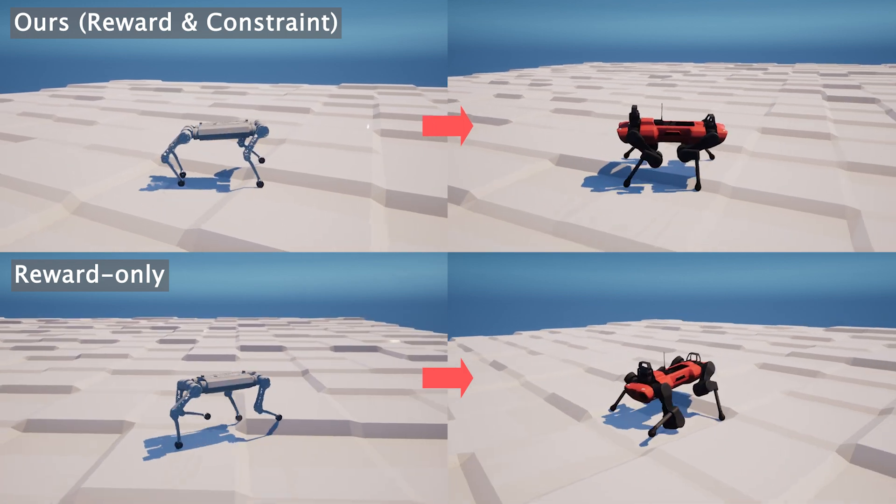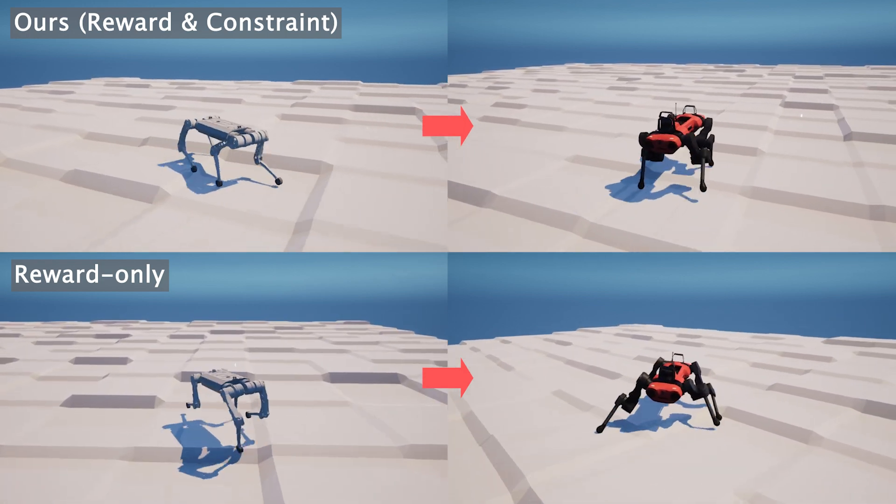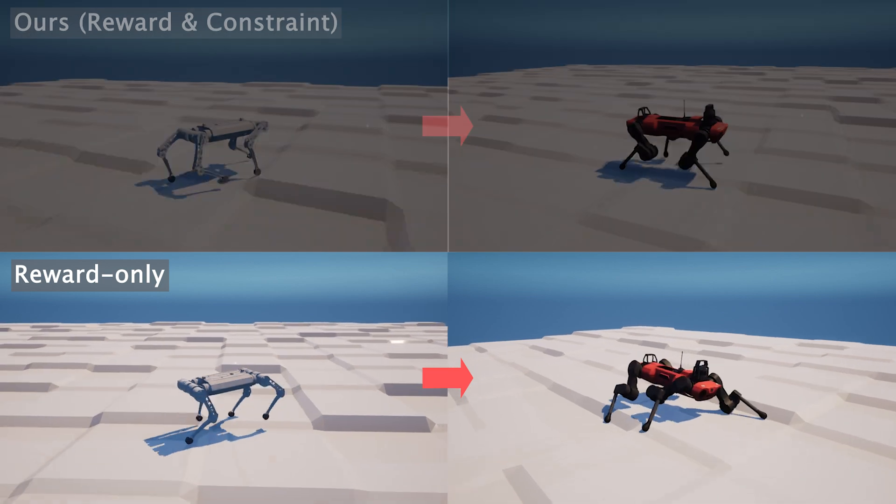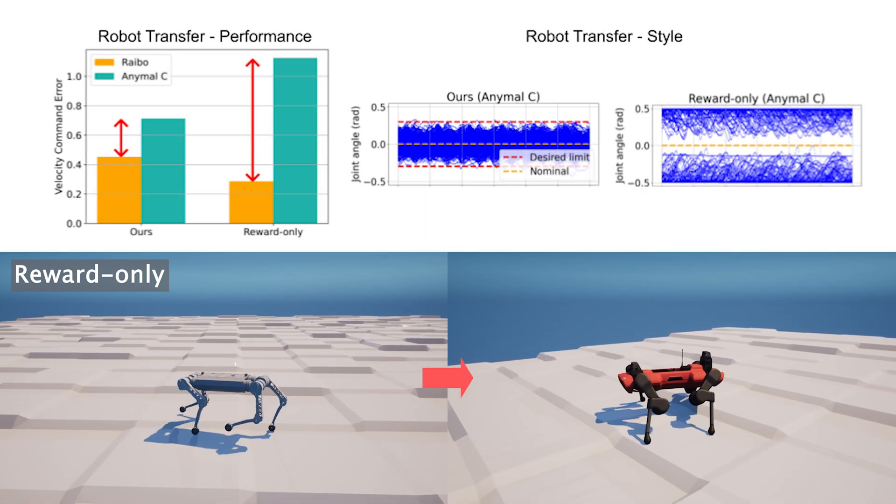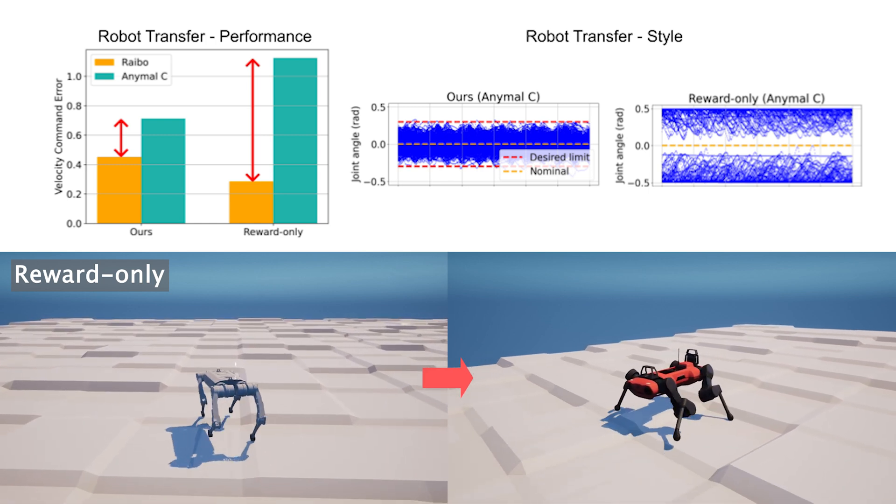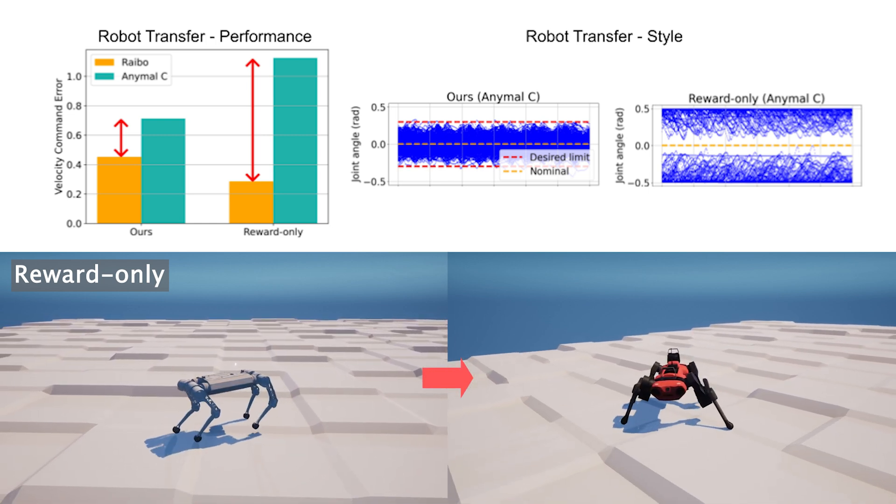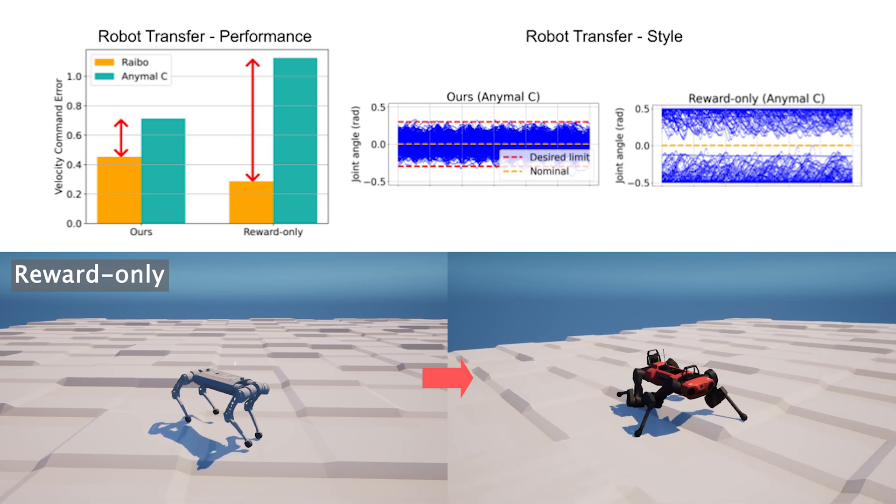Controllers trained solely with rewards struggled with generalization in contrast to the proposed learning framework. They instead exhibited significant degradation in their overall task performance and poor locomotion style transfer due to the varying magnitudes of each reward component.